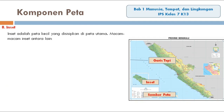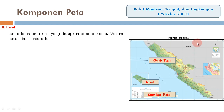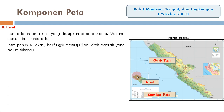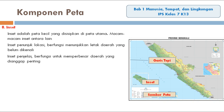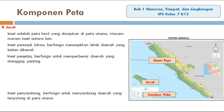Yang kedelapan, ada insert. Insert adalah peta kecil yang disisipkan di peta utama. Insert dibedakan ke dalam beberapa jenis: yang pertama, insert penunjuk lokasi; insert penjelas; dan insert penyambung.